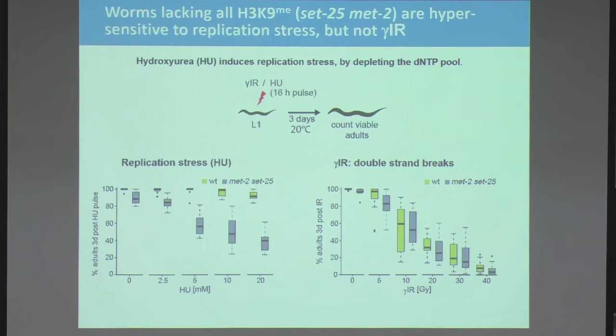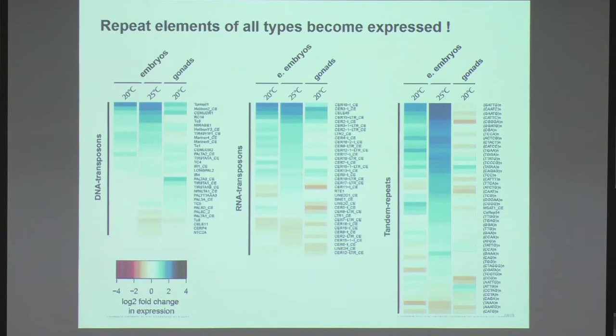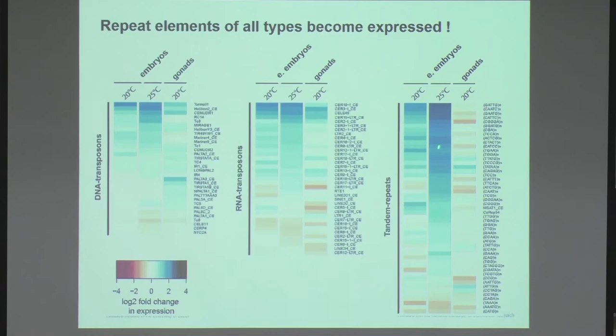When we examined the transcriptome, some genes were misregulated, but the most striking finding was that all types of repetitive elements — normally kept silent by H3K9 methylation — were now massively expressed, sometimes 16 to 32 fold above background, with a temperature dependence mirroring the temperature-dependent sterility. Repeat elements of all types became expressed in worms that could no longer deposit H3K9 methylation.